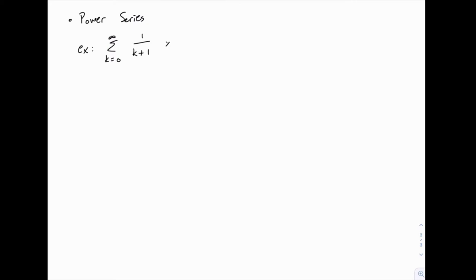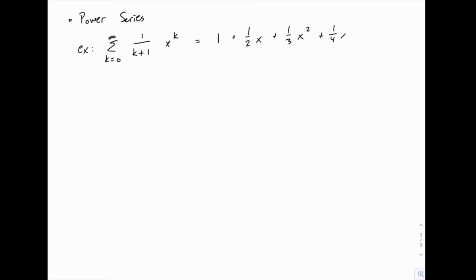Here's another power series. Notice that again we have x to the power of k, but there are some extra coefficients: 1 over k plus 1. So when k equals 0 you have 1 over 1 times x to the 0, which is 1. When k equals 1 you have 1 half times x. The next term is 1 third times x squared, and so on. Unlike the earlier example, now there are coefficients — 1, 1 half, 1 third, 1 fourth — that can affect the interval of convergence.